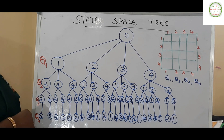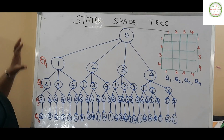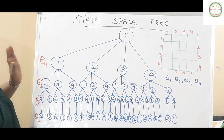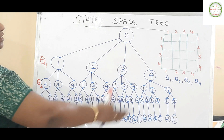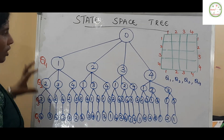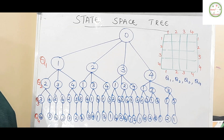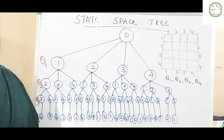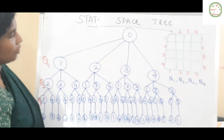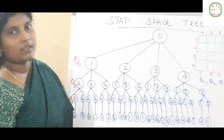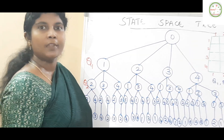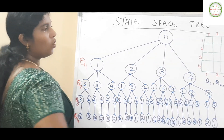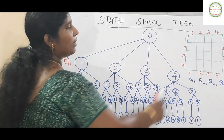This is the entire state space tree — starting from zero, one level after the other, showing how the queens are being placed. This gives the entire solution space. If a condition is satisfied, the solution is called a promising node. If the condition doesn't satisfy, we call it a non-promising node. If a feasible solution is not obtained — that is, the conditions are not satisfied — those leaf nodes are called non-feasible.